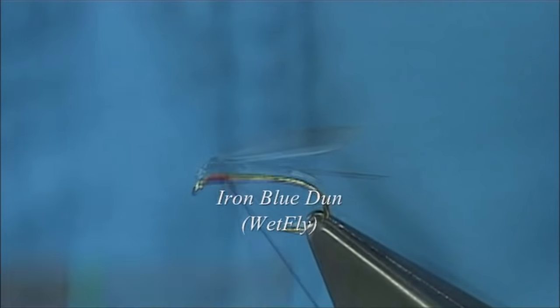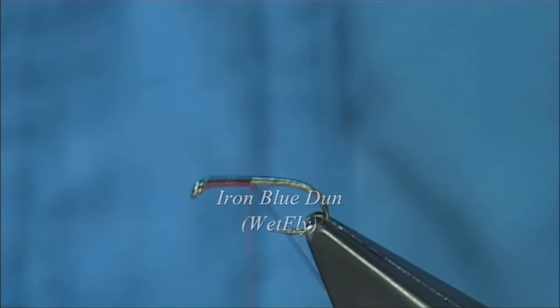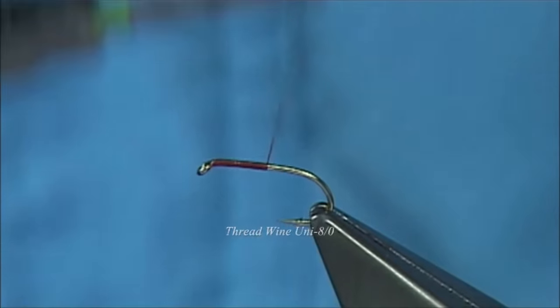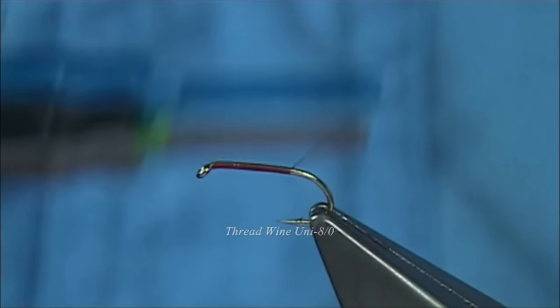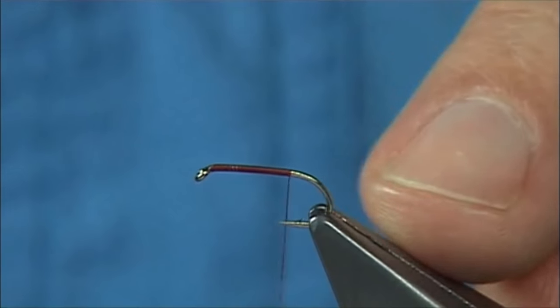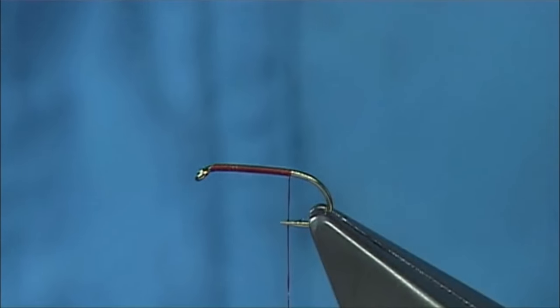Just like we start the thread at the eye and we work our way down, now at this point here remove the waste piece and then carry on down just slightly by the point, just halfway between the point and the barb.